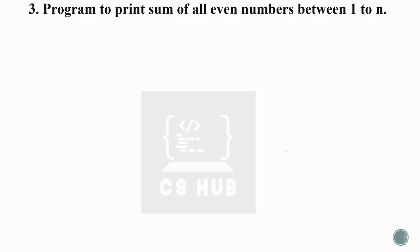Next question: program to print the sum of all even numbers between 1 to n. The difference from the previous program is small — instead of just printing even numbers, we now accumulate their sum. For example, if n is 6, even numbers are 2, 4, 6, and their sum is 2 plus 4 plus 6 equals 12.